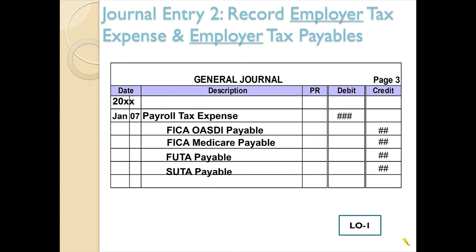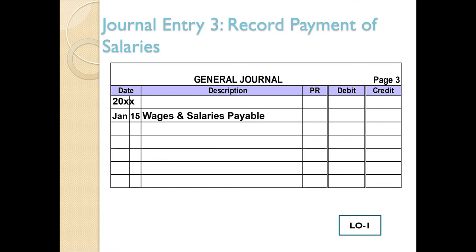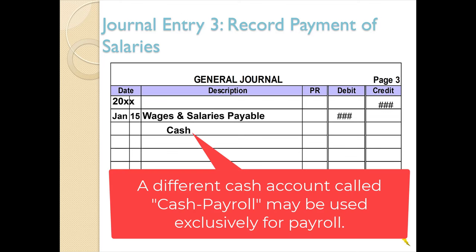The third entry is everyone's favorite because it's the easiest — you're actually paying the employees on this day. This entry would not be recorded at the end of the pay period; it's recorded sometime after the pay period ends. We lower wages and salaries payable and then lower cash. Oftentimes a company will use a separate cash account just for payroll, which might be called cash — payroll.